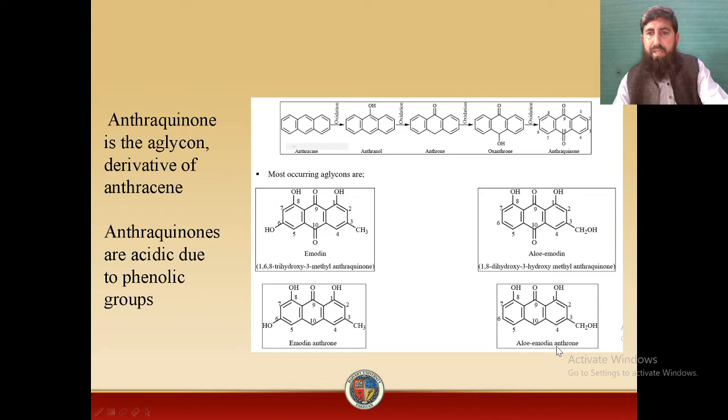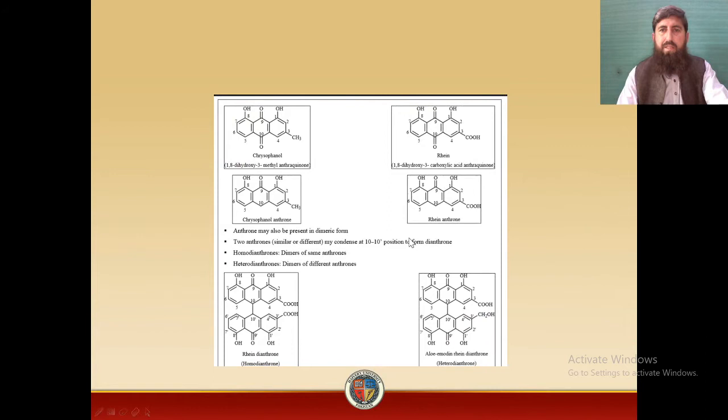Aloe-emodin anthrone is a compound in which hydroxyl groups are at carbon 1 and carbon 8, a CH₂OH group is at carbon 3, and there is no double-bond oxygen at carbon 10. Other aglycones include Chrysophanol-anthrone and Emodin-anthrone.